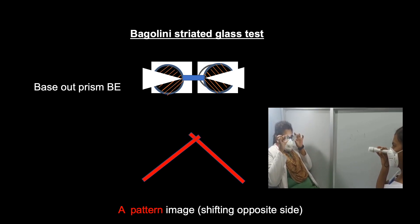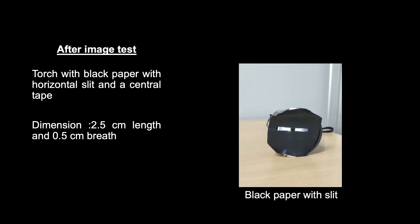The next one is the after image test. It is a very simple test. The torch light is covered with black tape with a central slit of 2.5 cm in height and 0.5 cm in width. And the center of the slit is covered with black tape to protect the fovea.